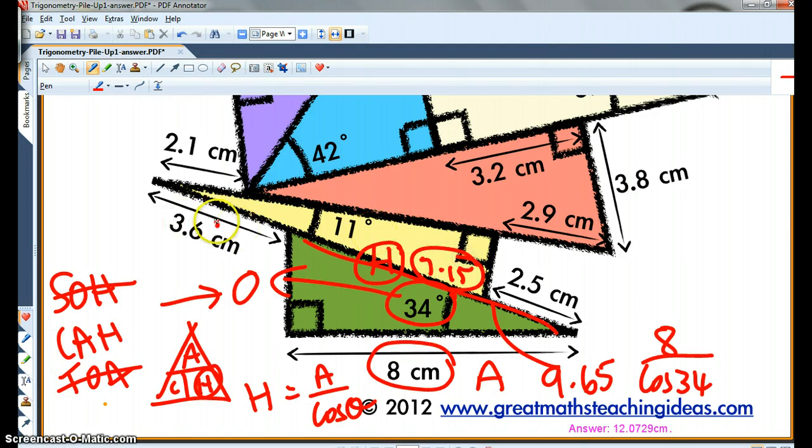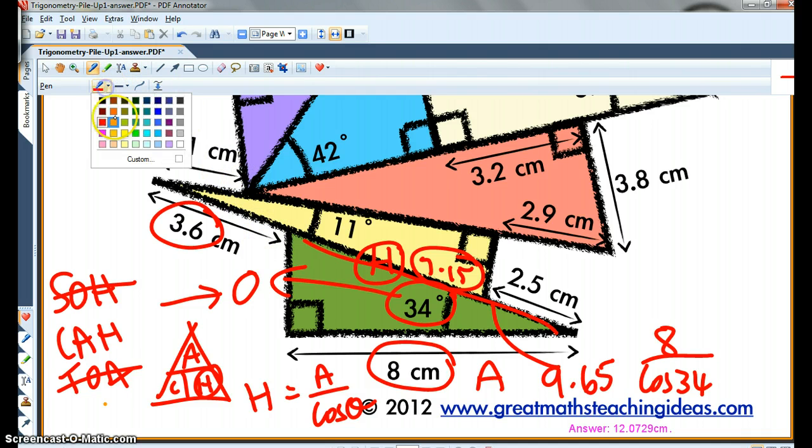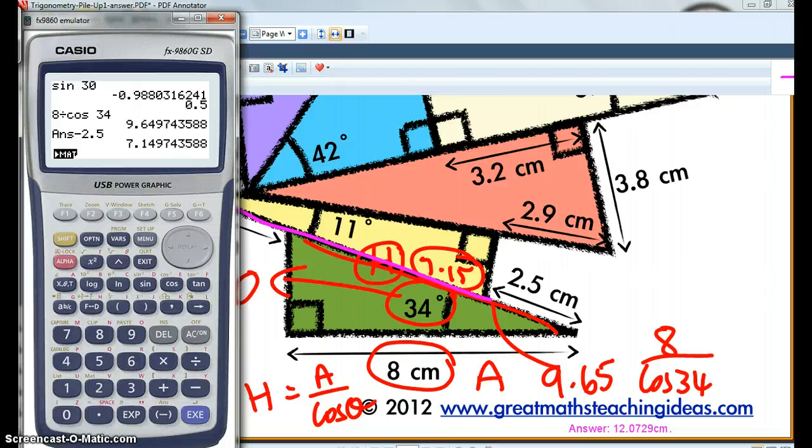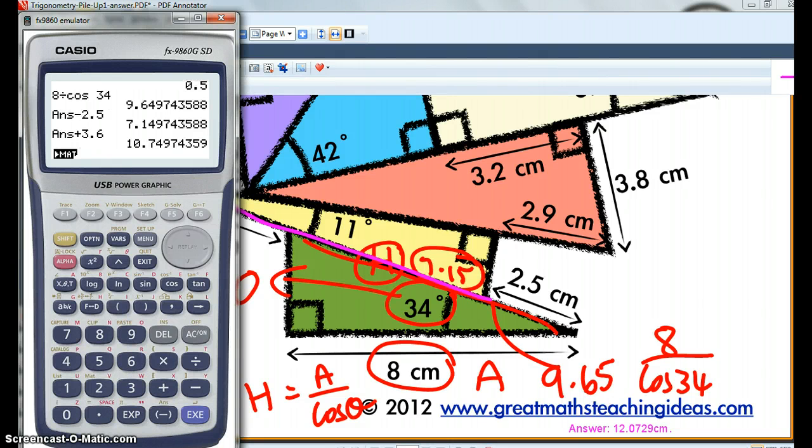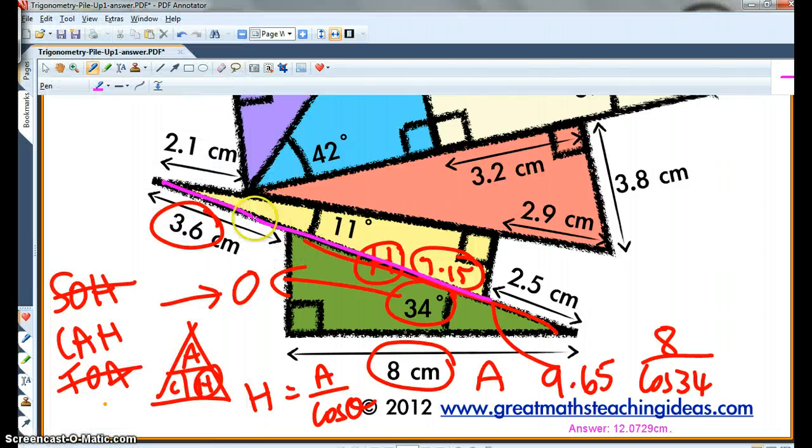7.15 plus 3.6. So let's have a look at this length here. 7.5 plus 3.6. So I need to add that 3.6 on. And I get 10.75. Is that right? 10.75.